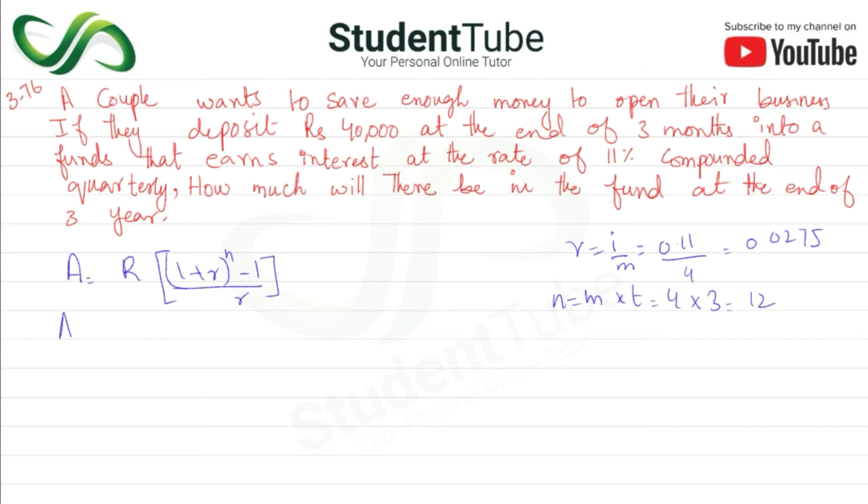So A is equal to 40,000 times [1 plus 0.0275 raised to the power 12 minus 1] upon 0.0275.